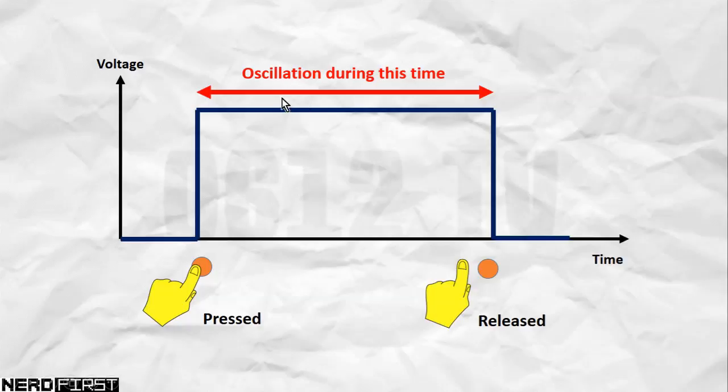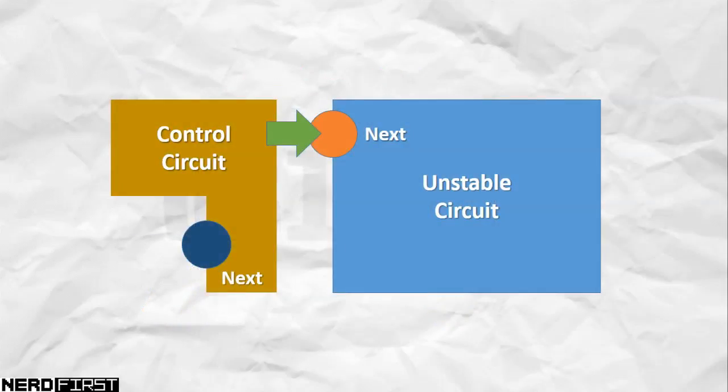You want to guarantee that this is high for as short a period of time as possible. How we can do this is implement a control circuit which feeds into the next button. You don't interact directly with this button, you interact only with the control circuit, and the control circuit can act as a filter to prevent the problem we've just seen.